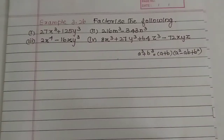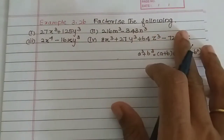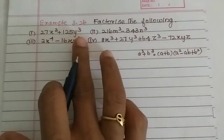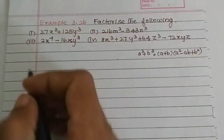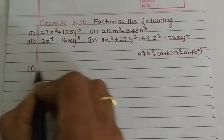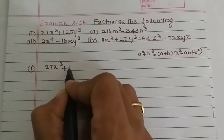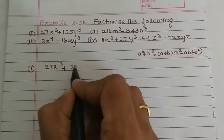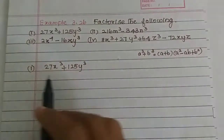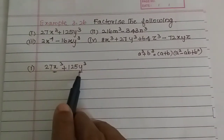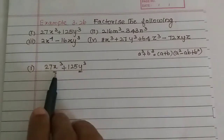Hey students, in this video we will see example 3.26 - factor the following. First subdivision: 27x³ + 125y³. We can see that both terms have x³ and y³, so this is a sum of cubes formula.